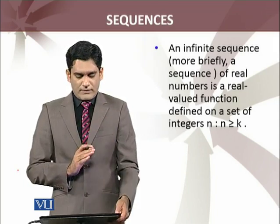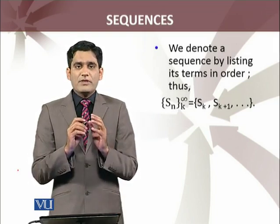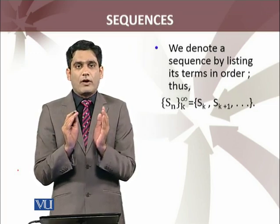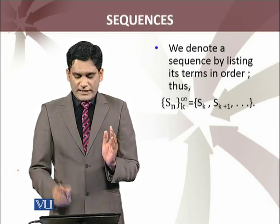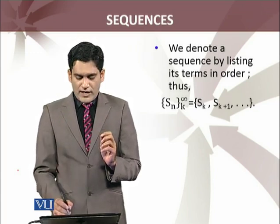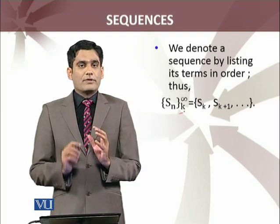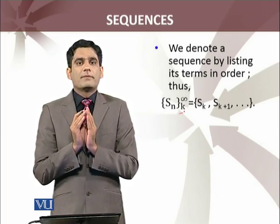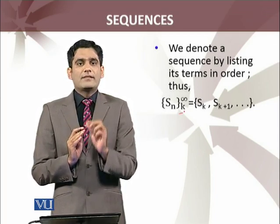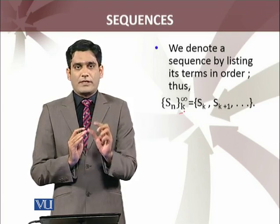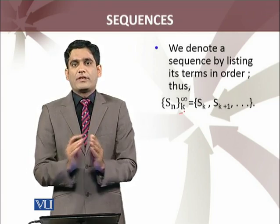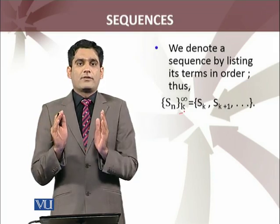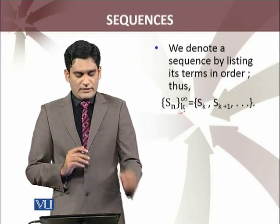Let me give you some examples of how we define a sequence. The terms of a sequence, which is a function, can be written explicitly, and in curly brackets as {s_n}, where n starts from k to infinity. This is how we denote the nth term of the sequence. Since the sequence starts from k, s_k will be the first term, s_{k+1} the second term, and so on. Because the set of integers is infinite, this produces an infinite set of real numbers which defines the sequence.